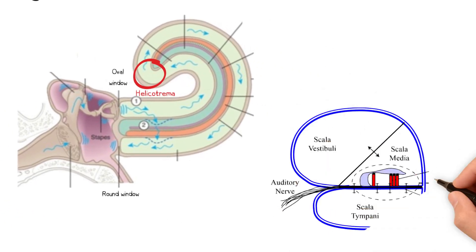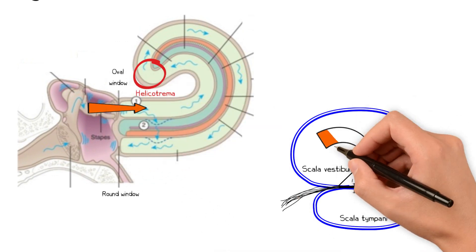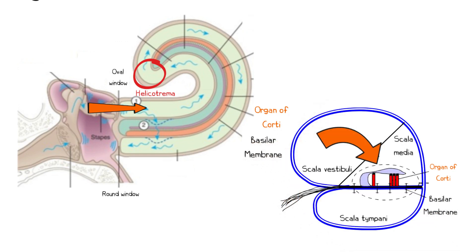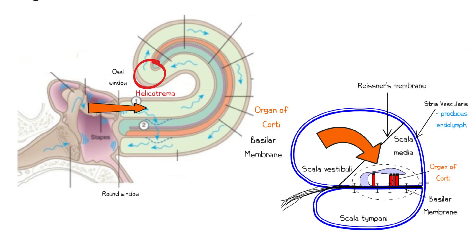Sound energy enters the scala vestibuli through the oval window and is conducted across to the scala media, where it is detected by the organ of Corti. The scala media consists of a basilar membrane upon which the hearing organ is found. The other sides include the stria vascularis, which is a bed of capillaries and secretory cells that produce endolymph, and Reissner's membrane, which separates the scala media from the scala vestibuli.